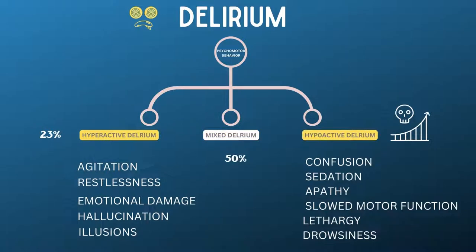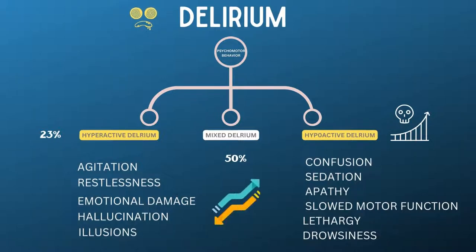Lastly, mixed delirium. Mixed delirium is the most frequent type, accounting for about half of the total cases. A combination of the two forms previously described, this condition manifests as a fluctuation between hypoactive and hyperactive behavior.